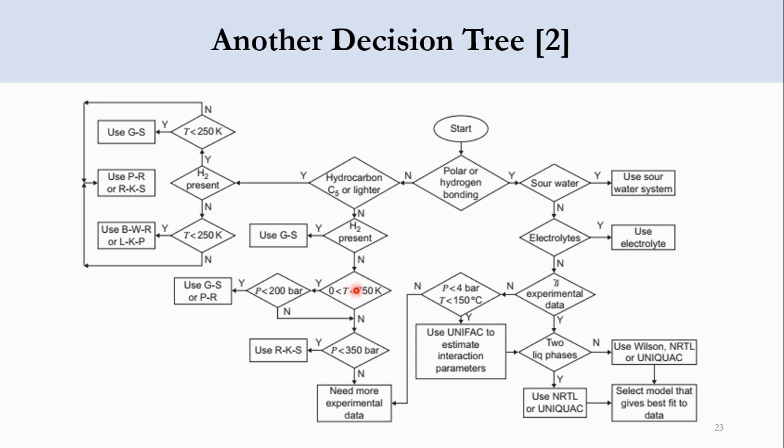If no, meaning the temperature is not in this range and pressure is not less than 200 bar, check whether the pressure is less than 350 bar. If yes, use RKS method. If no, you need more experimental data. And in the same case earlier, if the pressure is less than 4 bar and temperature is less than 150 degrees centigrade, if this condition is not met, we need more experimental data.